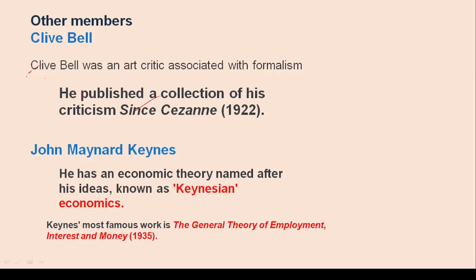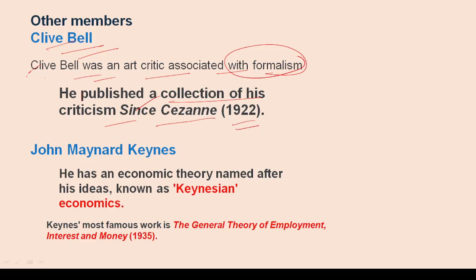Clive Bell was an art critic associated with formalism, and he published a collection of his criticism called 'Since Cézanne' in 1922. A question: in 1922 another famous work of modern English literature was also published — write your answer in the comment box if you know it.